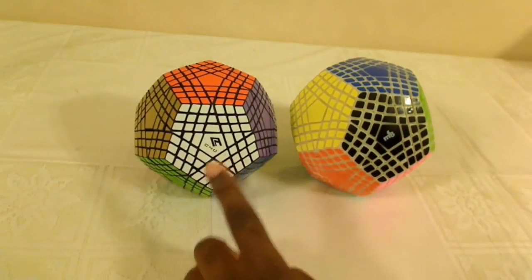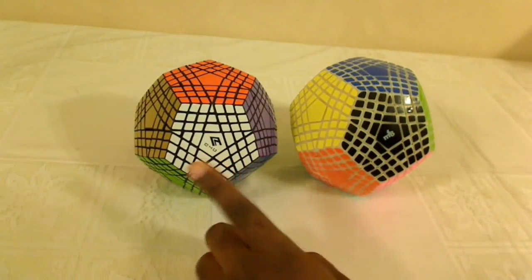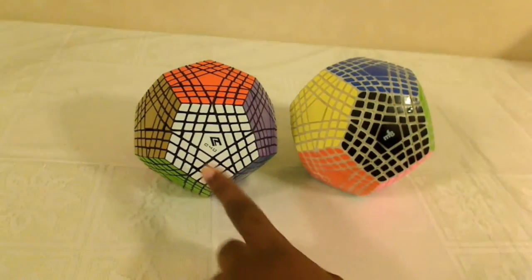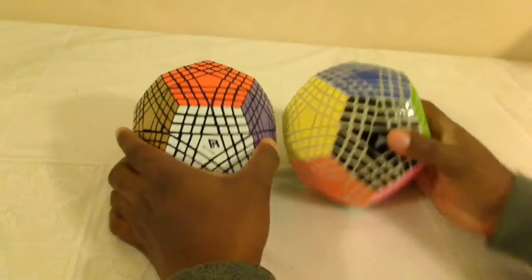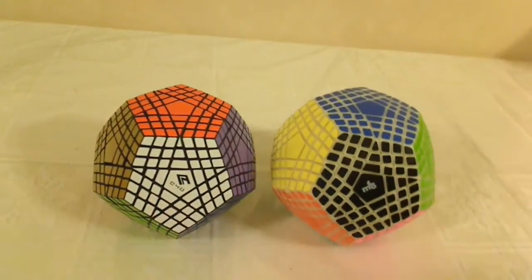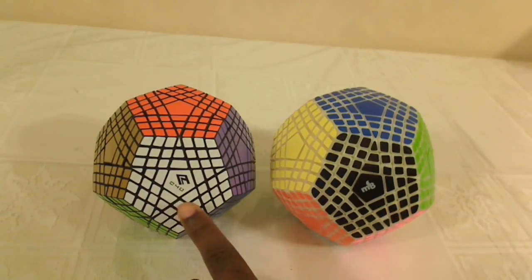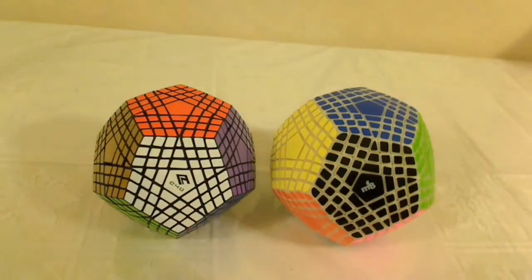This video is going to be a comparison specifically between the Cube4U Terra Minx and the MF8 Terra Minx. First of all, you can see that the MF8 Terra Minx is a little bit bigger than the Cube4U one, and it weighs more too. It weighs 760 grams, while the Cube4U one weighs 560 grams. Obviously, it's taller as well.